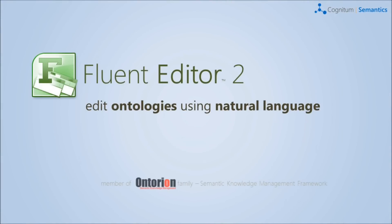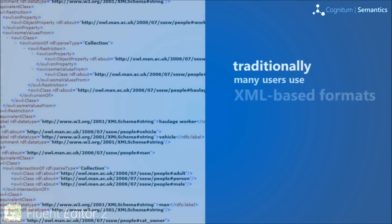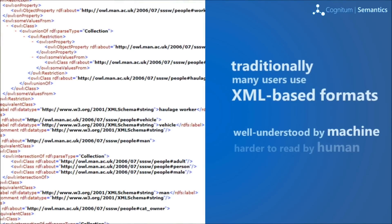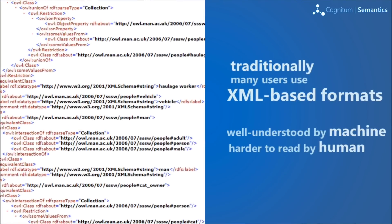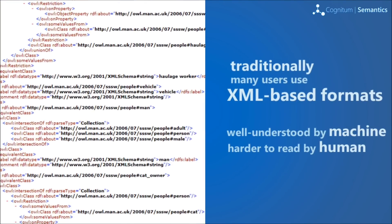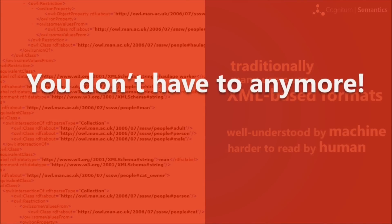Welcome to Fluent Editor 2, where you can edit ontologies using natural language. Traditionally, many users use XML-based formats, well understood by machines but harder to read by humans. You don't have to anymore.